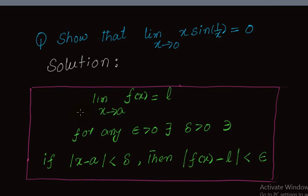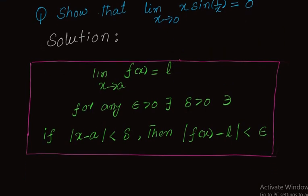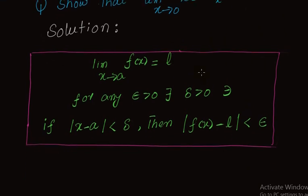Welcome students. In this lecture we will show that the limit as x approaches 0 of x·sin(1/x) is equal to 0, using the Delta-Epsilon definition. The Delta-Epsilon definition is shown on the screen.